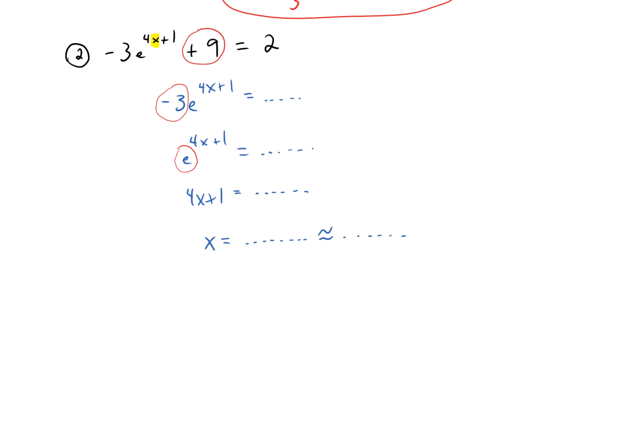All right, the answer to the second problem is going to be the natural log of 7 thirds minus 1 over 4. Okay? So that's what you should get when you get x by itself.